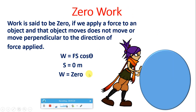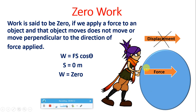Zero work done: work is said to be zero if we apply a force to an object and that object does not move, or moves perpendicular to the direction of force applied. The first situation is when there is no displacement — for example, a person trying to push a heavy load that does not move. Displacement is zero meters, so total work done becomes zero.